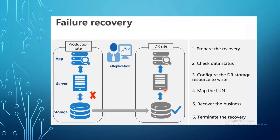If the primary site goes down, BC Manager handles failover automatically — no manual intervention needed. It maps the LUNs and recovers the business on the DR side. If your RPO is 8 hours, you will have 8-hour-old data available at the DR site since replication stops when the primary is down.